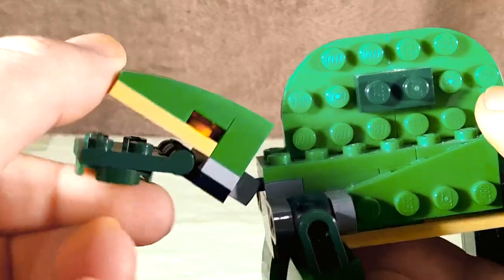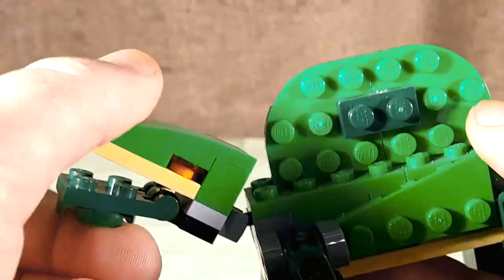The head is on a ball joint so it can move all around like this. The mouth is on a hinge so it can open and close.